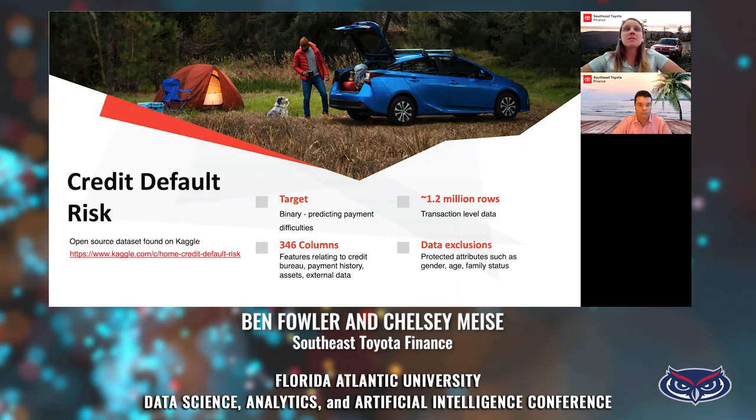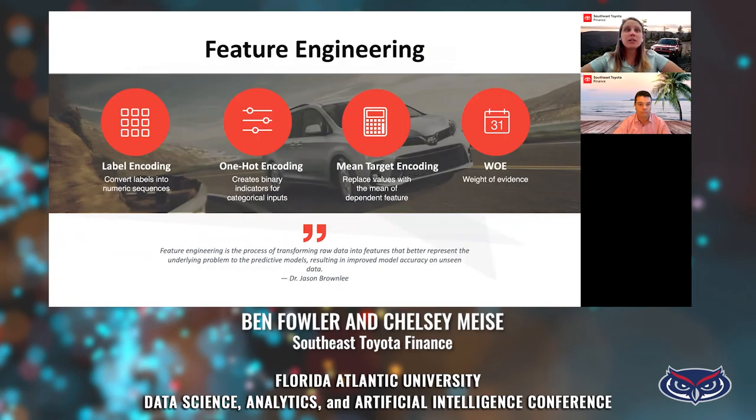One strength of this data is that it mimics real world data with about 1.2 million rows. In terms of data exclusion, which I'll speak to more thoroughly later on, we excluded applicant features relating to gender, age, and family status.